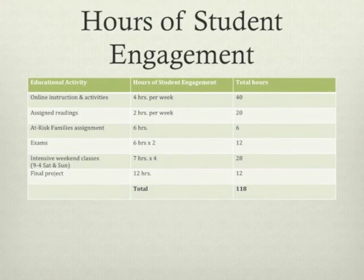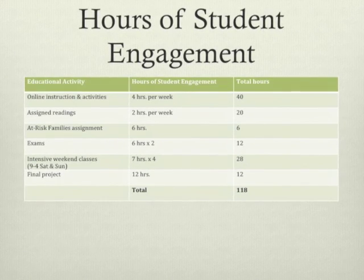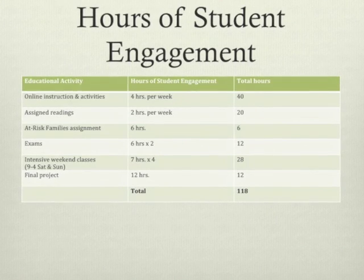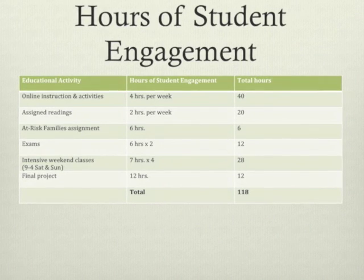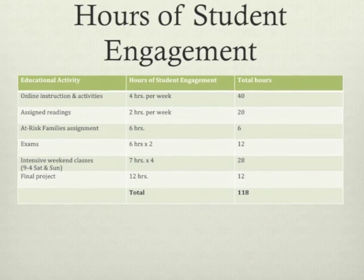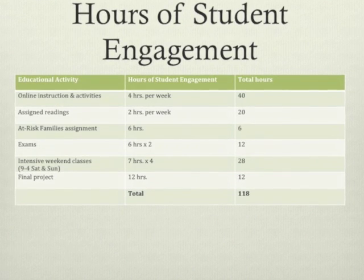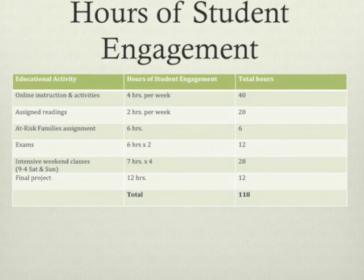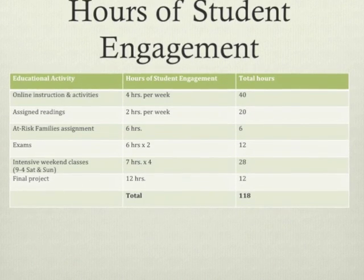The University of Oregon requires 120 hours of student engagement for a four-credit class. This table breaks down the proposed hours by educational activity. A lot of it will be online — that's worth 40 hours — and the intensive weekend classes are worth about 28 hours, putting us at about 118 hours total, give or take.